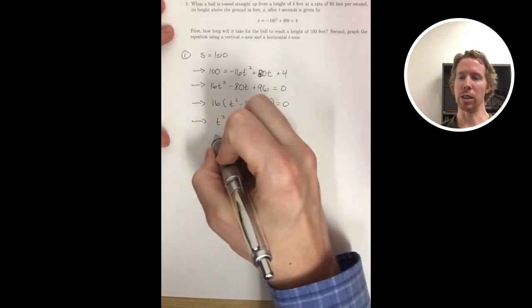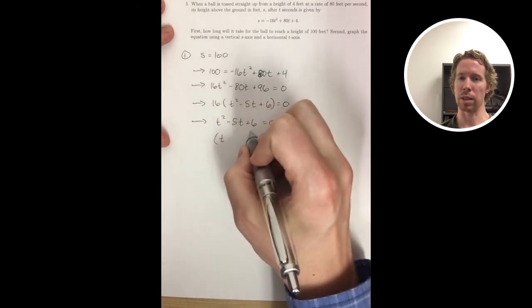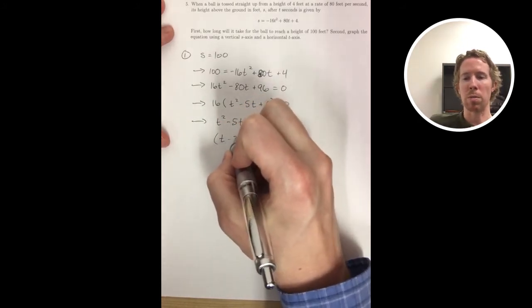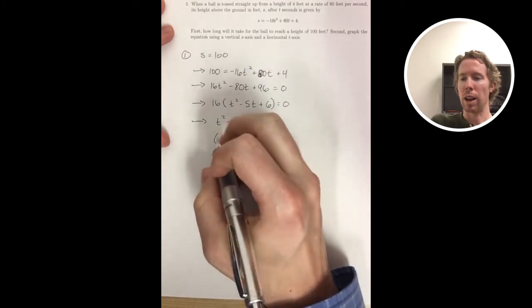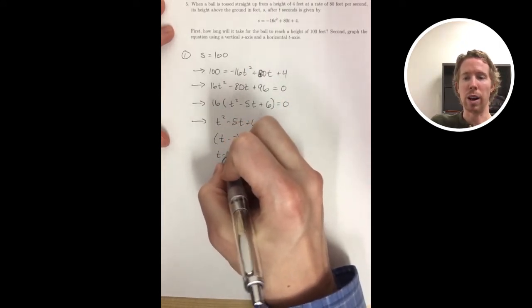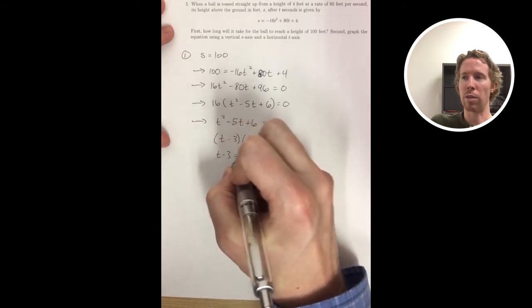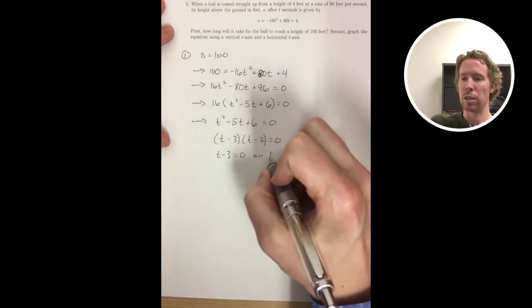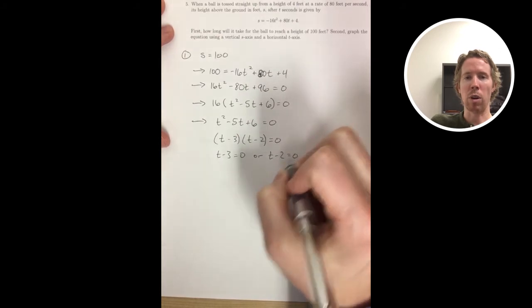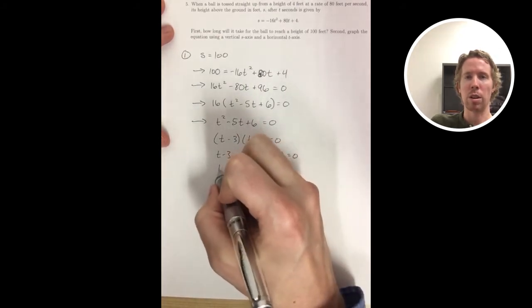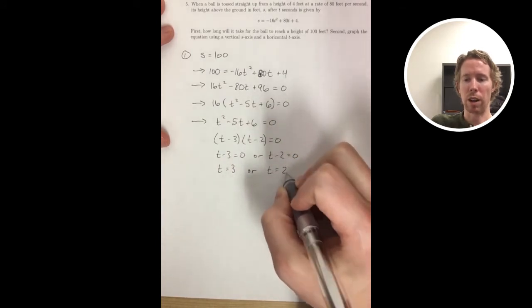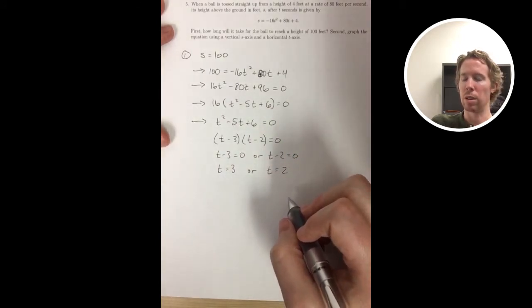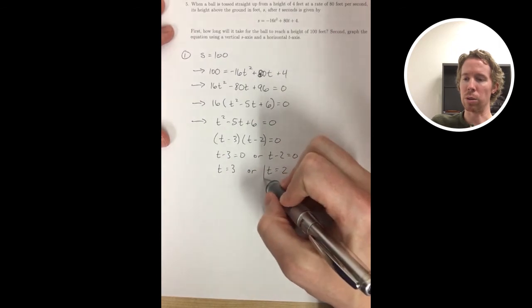So I take that t squared minus 5t plus 6. I try to think of two numbers that multiply to positive 6 and add to negative 5. Negative 3 and negative 2 will do that, so I know how to factor it. Once I have it factored and I have one number times another number equals 0, one of those two numbers had to be 0. So I set them both equal to 0 and find two different t values: t equals 3 seconds and t equals 2 seconds.